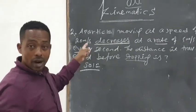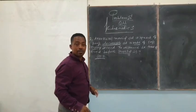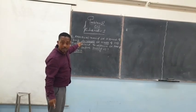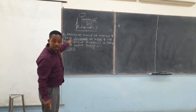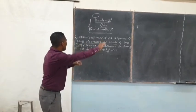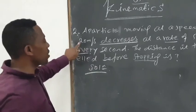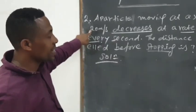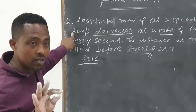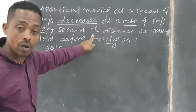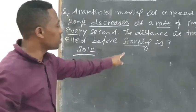And then we did one problem in our previous video and defined what kinematics is. Now this problem is very short. It says a particle moving at a speed of 20 m per second decreases at a rate of 5 m per second every second. If so, we need to calculate the distance until it becomes stopped.